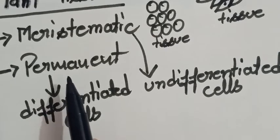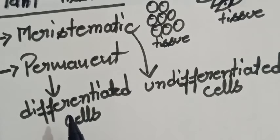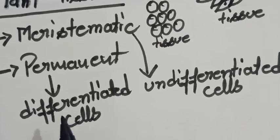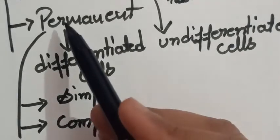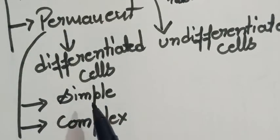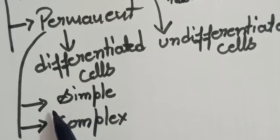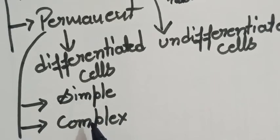Permanent tissues have a permanent structure with differentiated cells that lose the capability of division — they cannot give rise to new structures and have a permanent structure as well as function. These permanent tissues are further divided into two types: simple permanent tissue and complex permanent tissues.